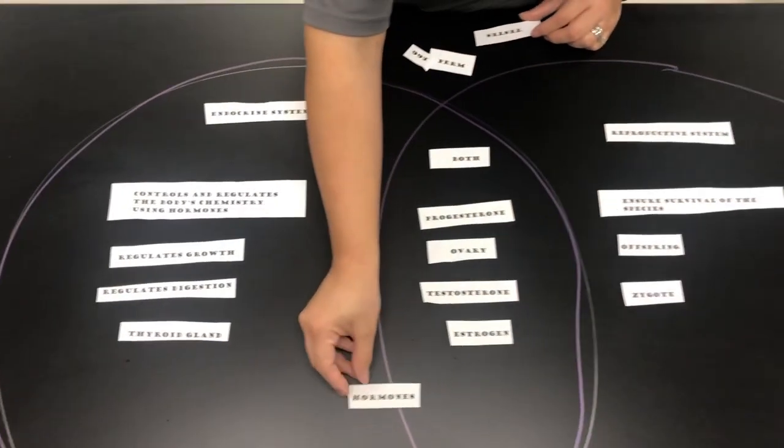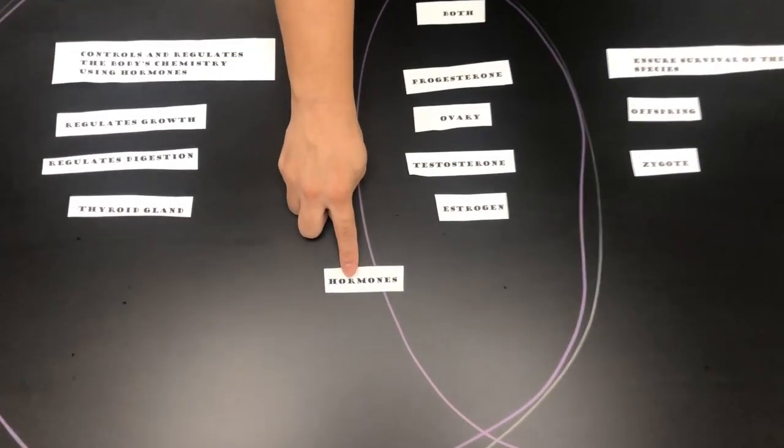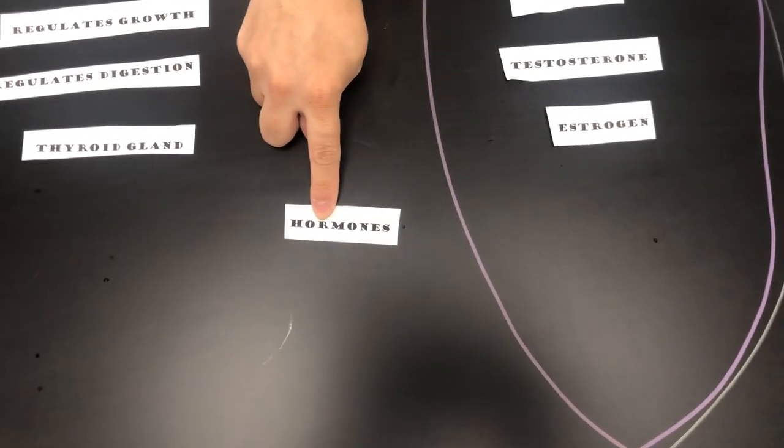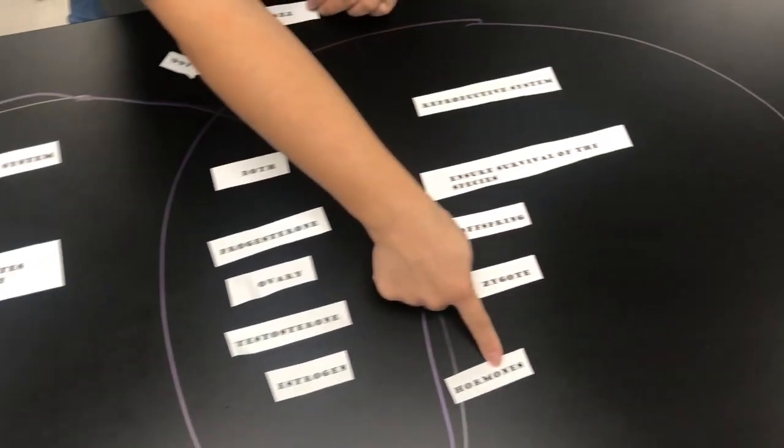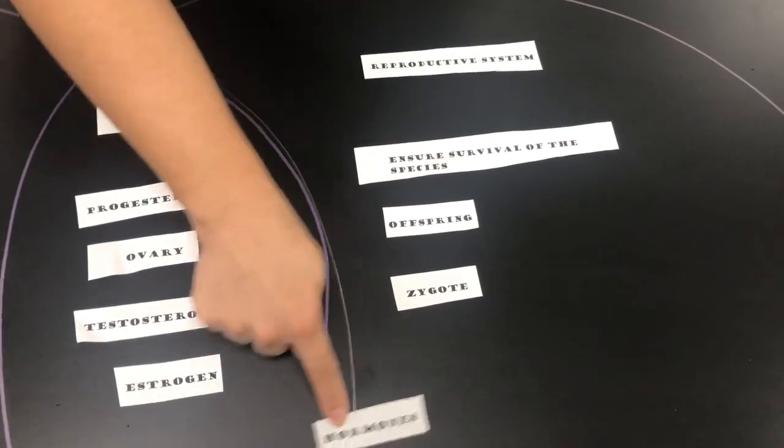The word hormones. Hormones we definitely have in the endocrine system, but we do have hormones of the reproductive system. So we can put hormones in the middle for both.